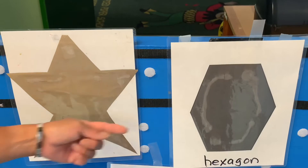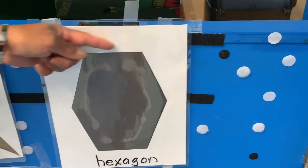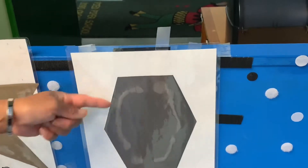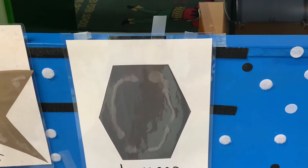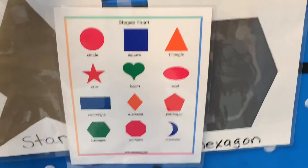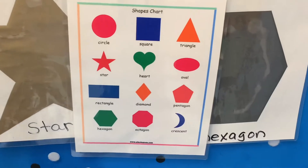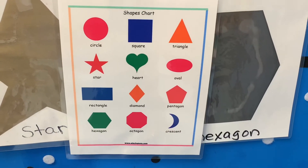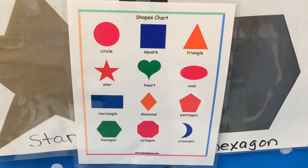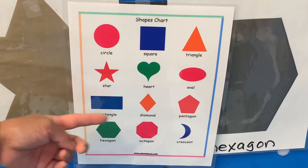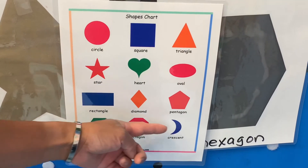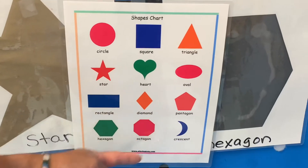Let's move over to hexagon. Diagonal line, straight line, diagonal, diagonal, straight, diagonal — one, two, three, four, five, six sides. I want you to keep reviewing your shapes, and you can always pause this and start drawing them. Every day you must practice, because practice makes it easy. Circle, square, triangle, star, heart, oval, rectangle, diamond, pentagon, hexagon, octagon, and crescent. Great work, keep on practicing.